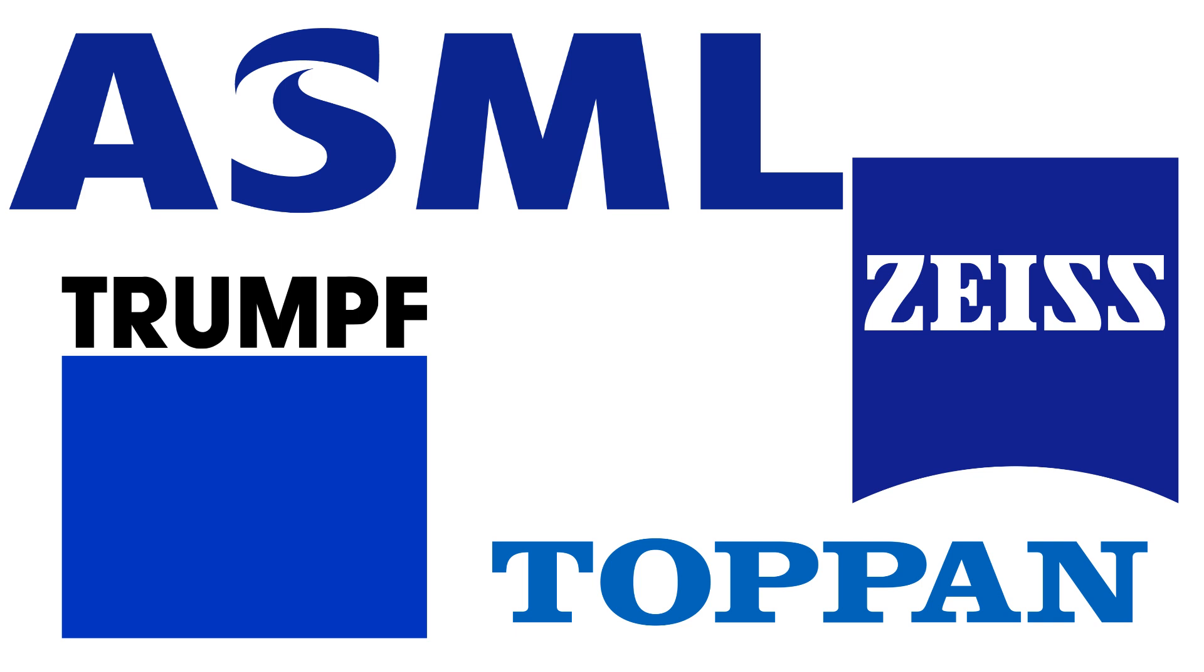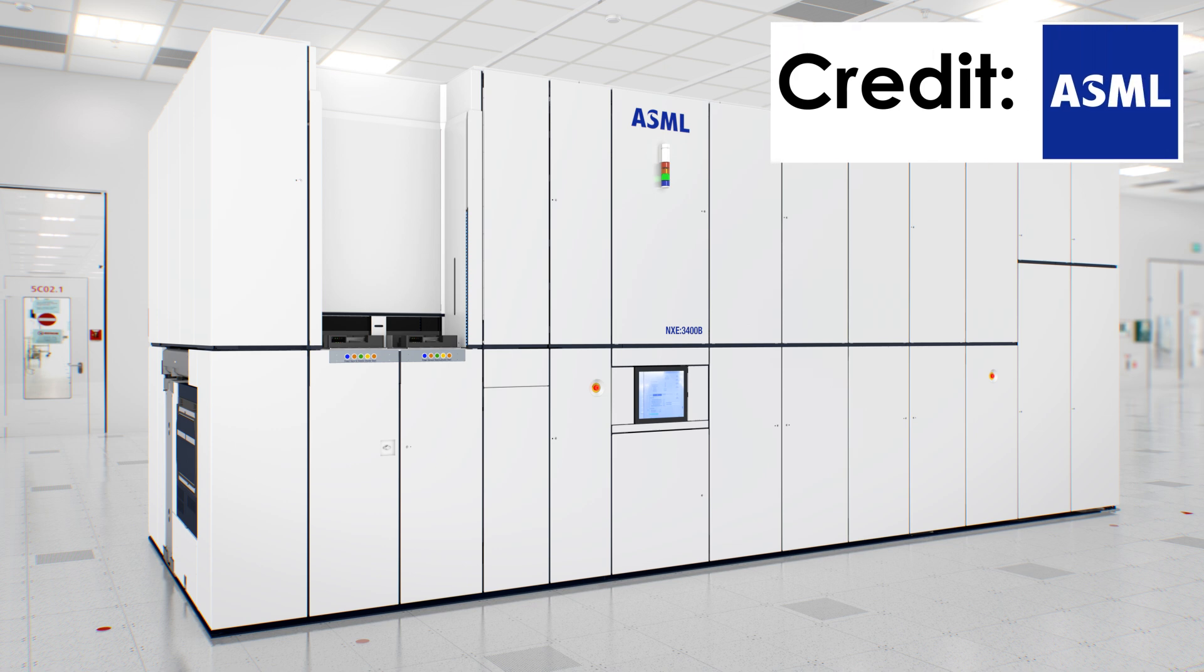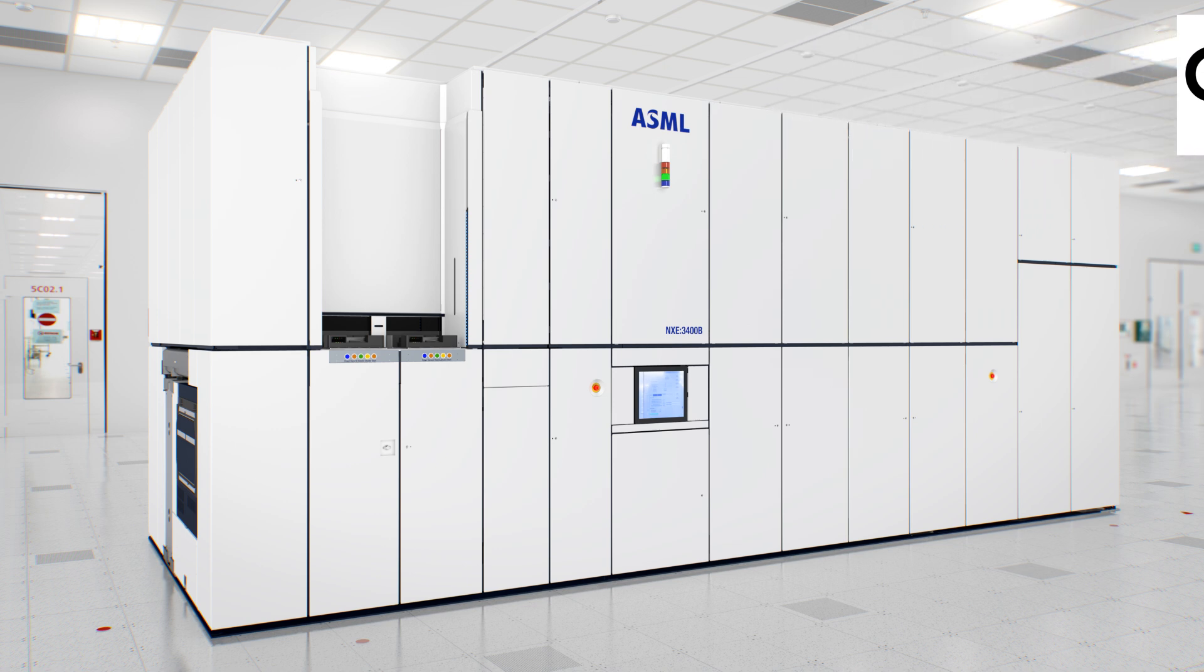Despite these challenges, the engineers at ASML, with the help from Zeiss, Trumpf, and others, have successfully created machines capable of creating chips using EUV light at a commercial scale. The TwinScan NXE 3400C lithography system was the first brought to market, capable of making chips at the 7 and 5 nanometer nodes at production volume. Now ASML has improved the technology further in their new TwinScan NXE 3600D system, capable of producing chips down to the 3 nanometer scale.